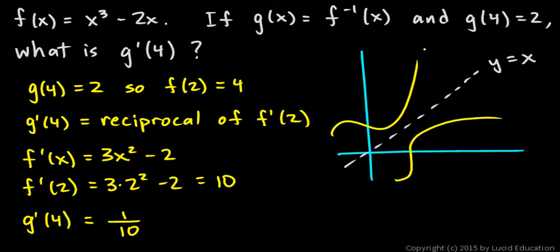So it may be something like this. If this is function f, this is function g, and any point on function f will have a corresponding point on function g. So if this point up here is the point 2 comma 4, then this point here is the point 4 comma 2. And that's what we did in this step. If g of 4 is equal to 2, then f of 2 is equal to 4, and you can see that on those points.